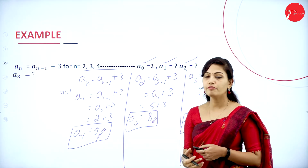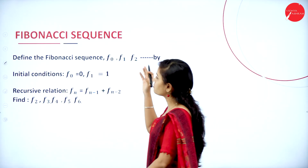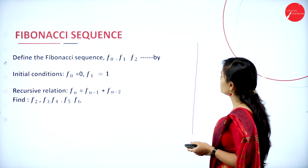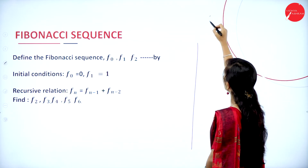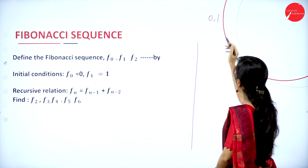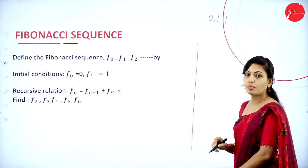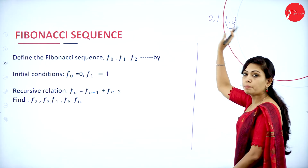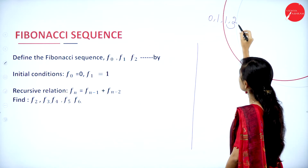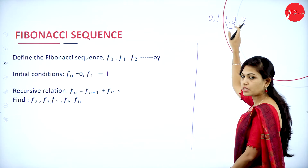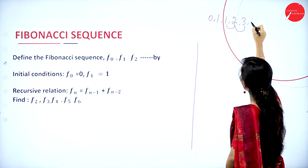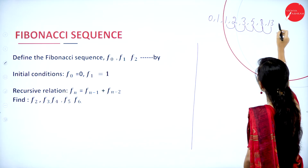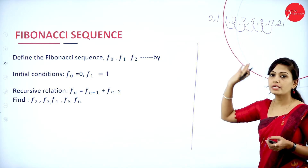In sequencing, we have the Fibonacci sequence term. The Fibonacci series starts from 0 and 1. Adding 0 + 1 gives 1, then 1 + 1 = 2, 2 + 1 = 3, 3 + 2 = 5, 5 + 3 = 8, 8 + 5 = 13, 13 + 8 = 21. If you add the previous term with the present term, you get the next term. This concept is known as the Fibonacci sequence.